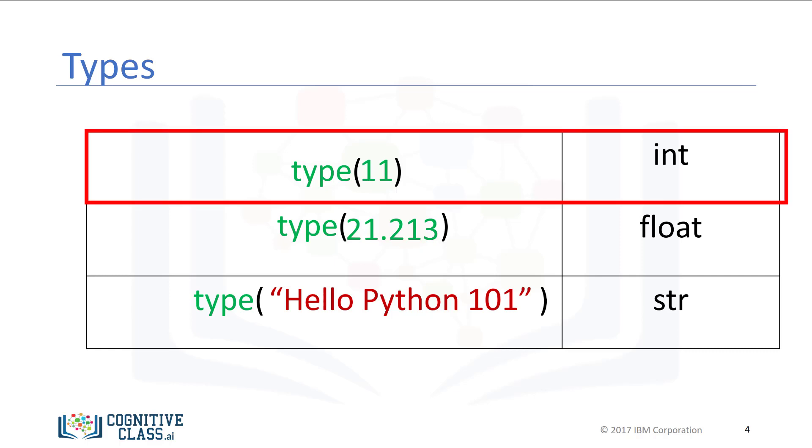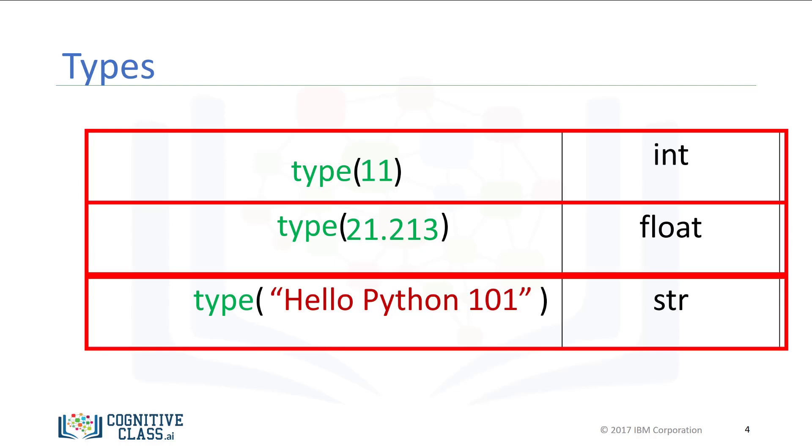We can have int, which stands for an integer, and float, that stands for float, essentially a real number. The type string is a sequence of characters.